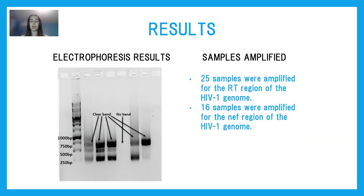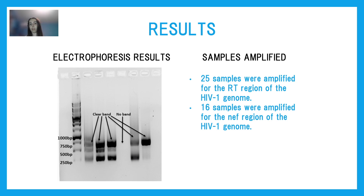Here are some results I've got from the amplification of six samples. We expected amplified fragments that were approximately 700 base pairs in length. You can see here my bands are just below the 750 line on the ladder, which indicates that I was successful. However, one of the six samples here has no clear band — this is an example of a negative result indicating that amplification for that sample was not successful. For my project, of the total 76 patient samples available, 25 were amplified for the RT region and 16 for the NEF region, including samples from all eight patients. Our samples have not yet been sent for sequencing as we're still working on amplifying samples that were unsuccessful, but we need to do this in order to develop a more complete dataset.